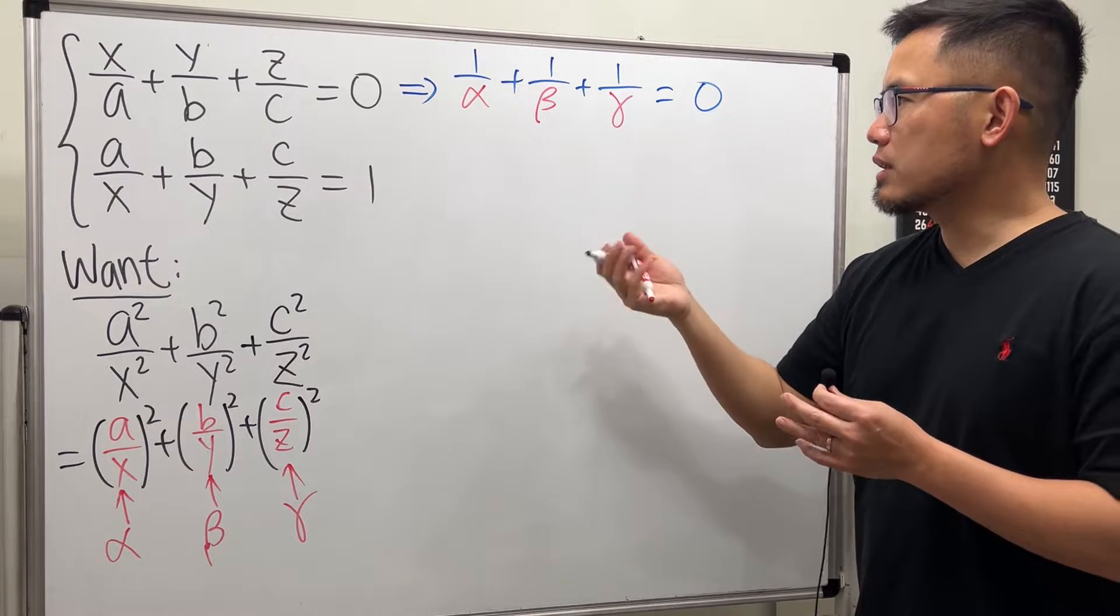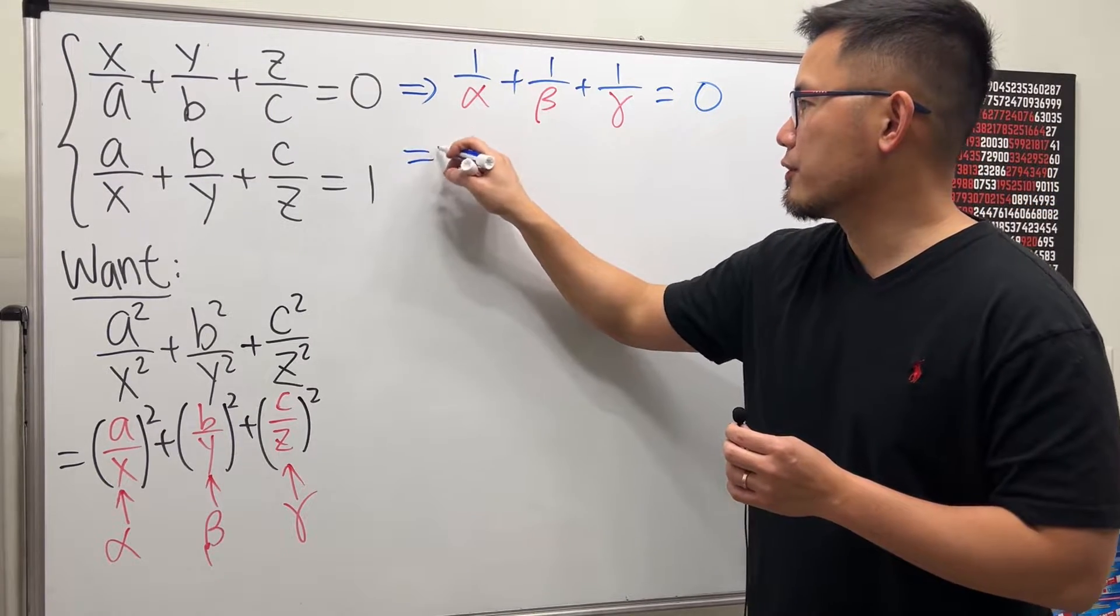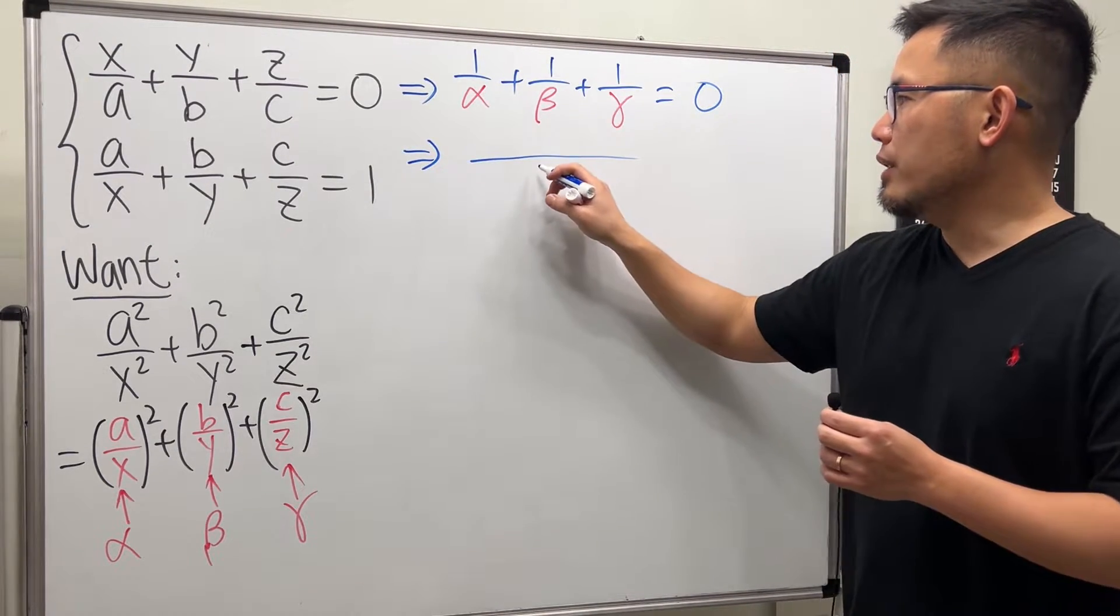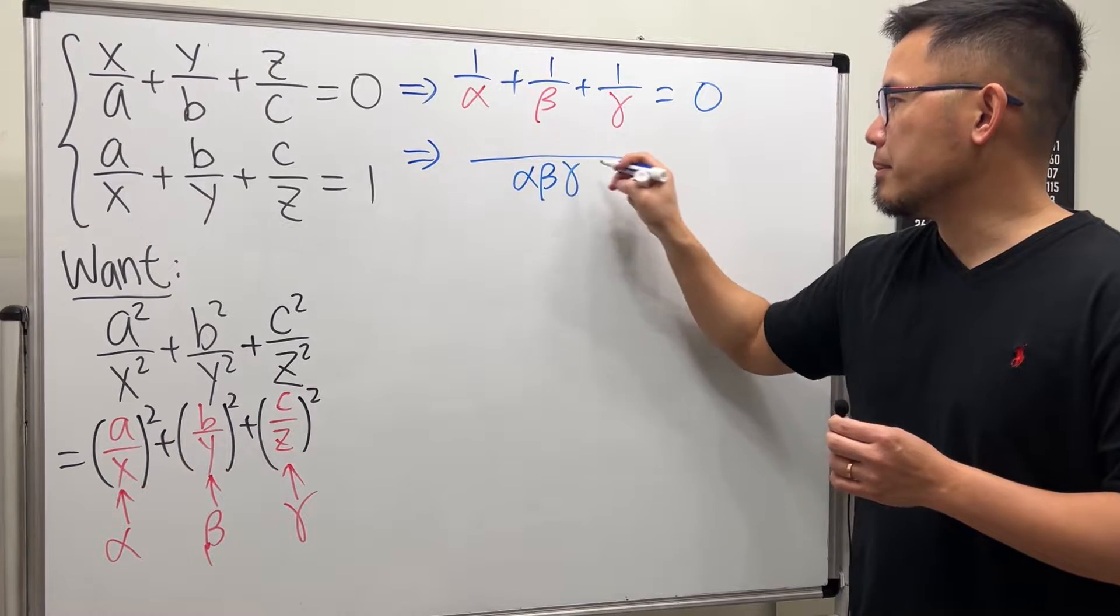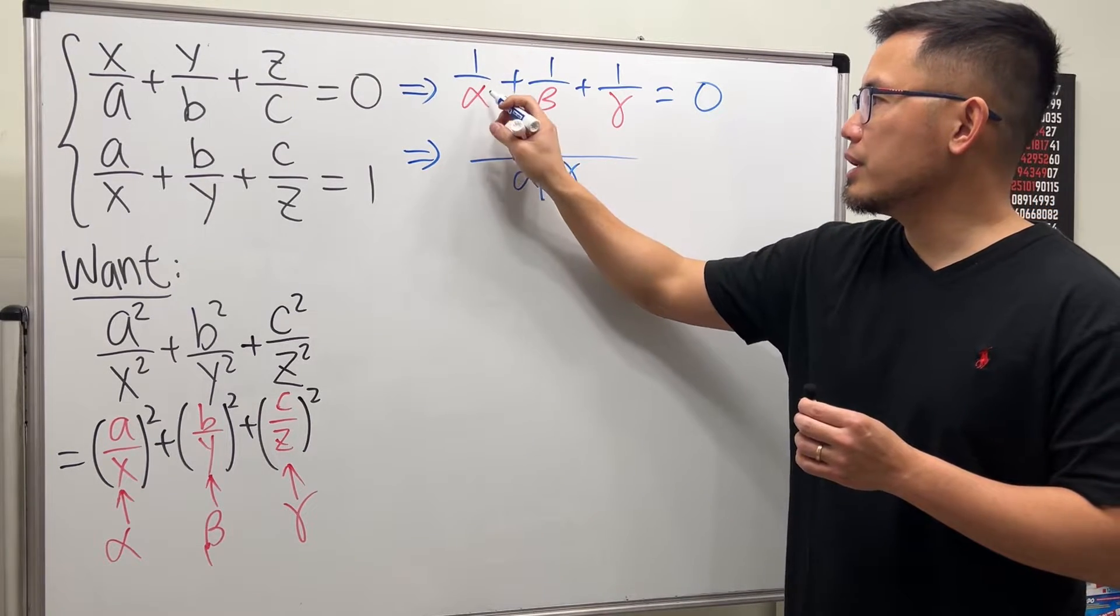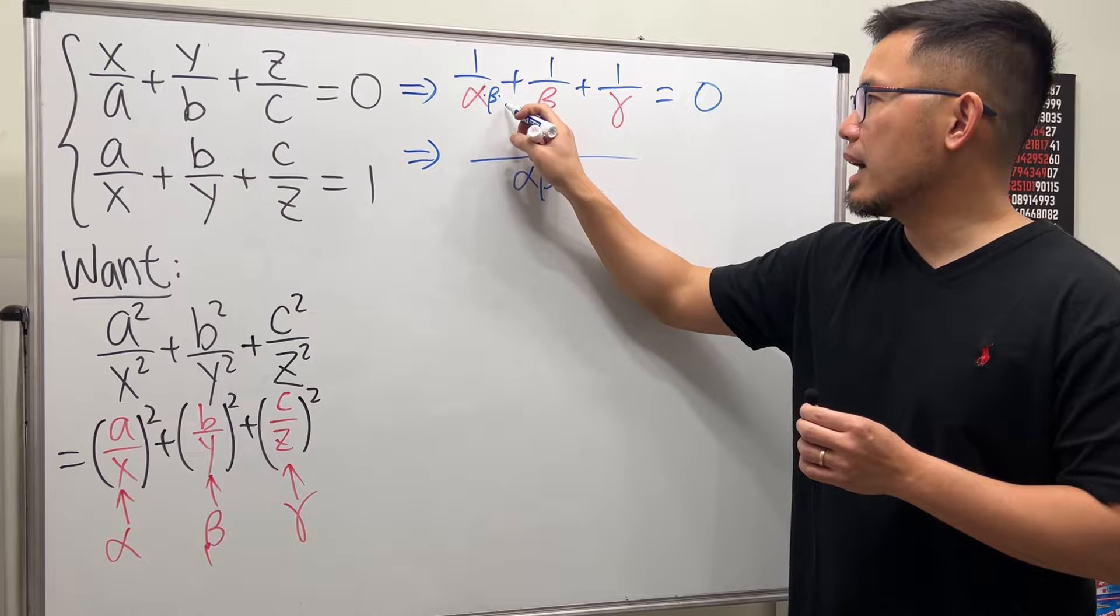And you can just combine like terms a little bit. We'll combine the fractions. So you end up with alpha, beta, and gamma on the bottom. For this right here, I need to multiply beta and gamma.